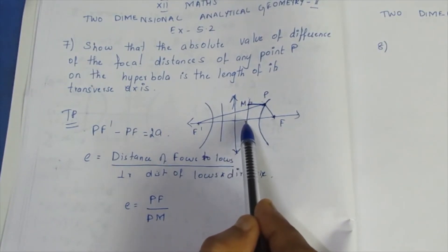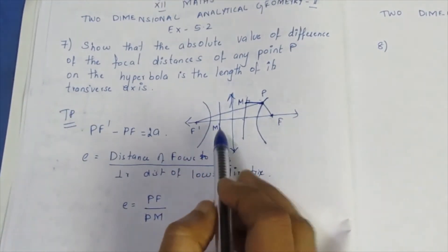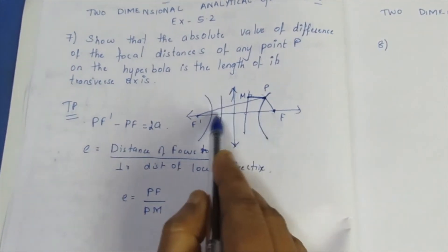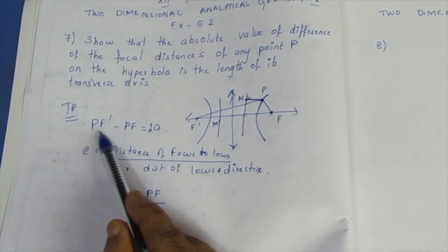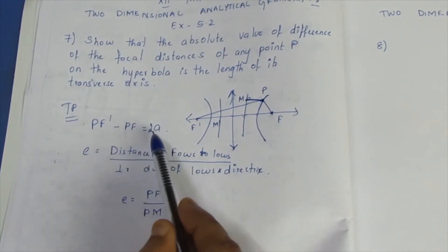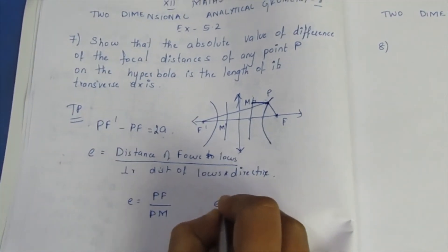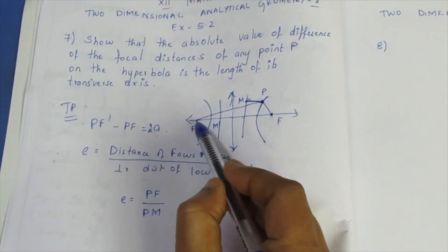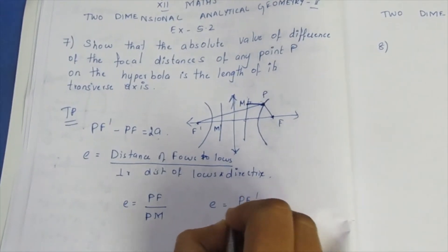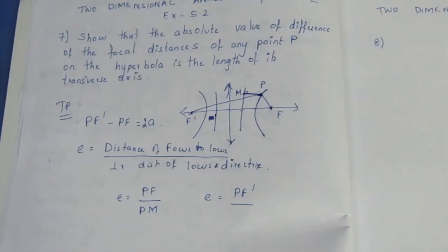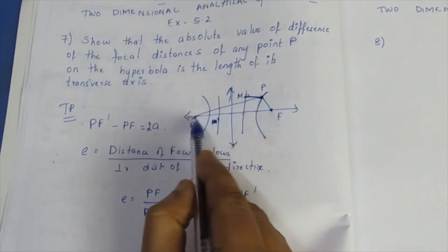The perpendicular distance to the directrix gives us M dash on the other side. For focus F dash, the focal distance PF dash equals e times PM dash. So using eccentricity e on both sides: PF equals e·PM and PF dash equals e·PM dash.